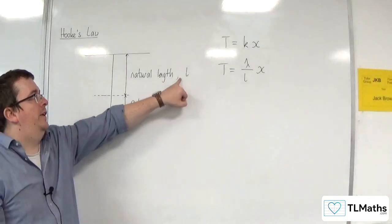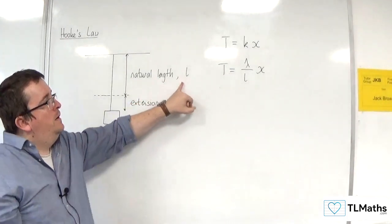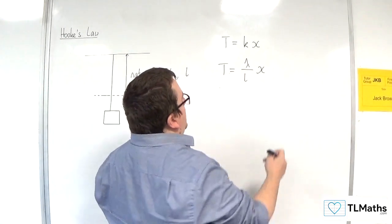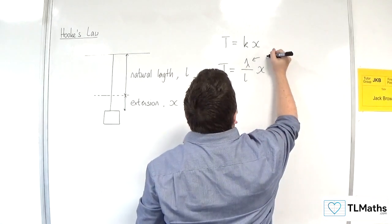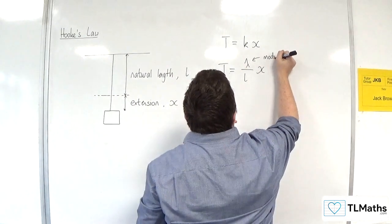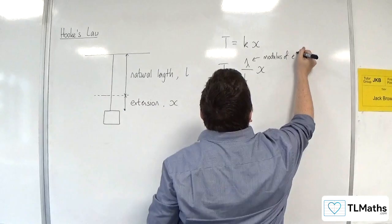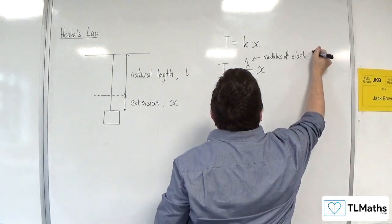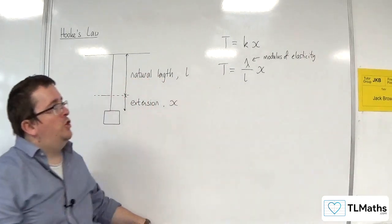OK, so L, of course, as I said, is the natural length. Lambda is what's referred to as the modulus of elasticity. And it's measured in newtons.